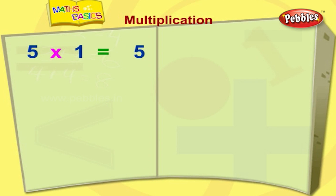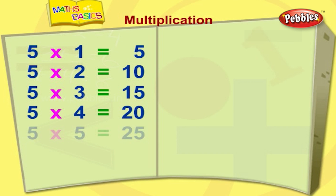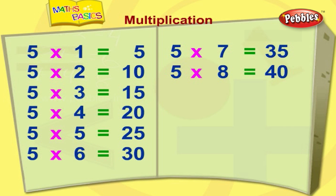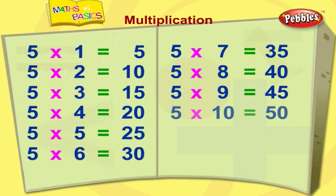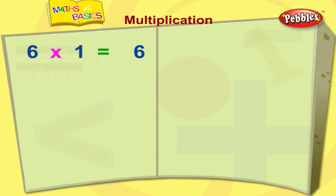Five ones are five. Five twos are ten. Five threes are fifteen. Five fours are twenty. Five fives are twenty-five. Five sixes are thirty. Five sevens are thirty-five. Five eights are forty. Five nines are forty-five. Five tens are fifty. Five elevens are fifty-five. Five twelves are sixty.